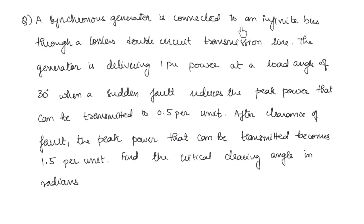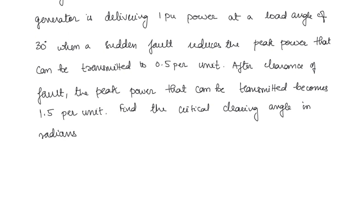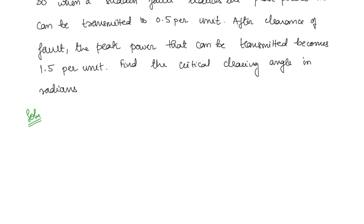A synchronous generator is connected to an infinite bus through a lossless double-circuit transmission line. The generator delivers 1 per unit power at a load angle of 30 degrees. A sudden fault reduces peak power to 0.5 per unit. After fault clearance, peak power becomes 1.5 per unit. Find the critical clearing angle in radians.